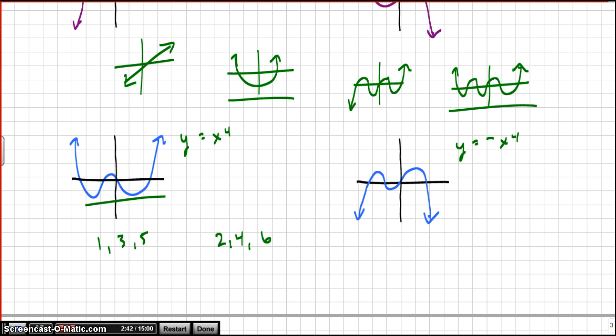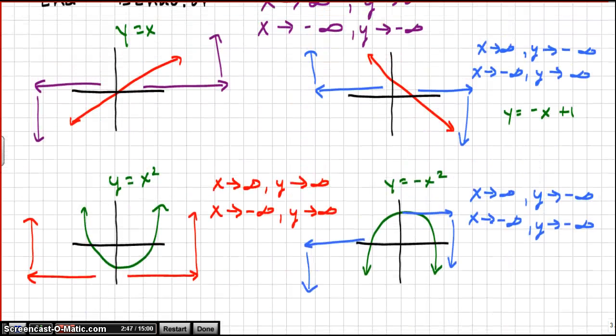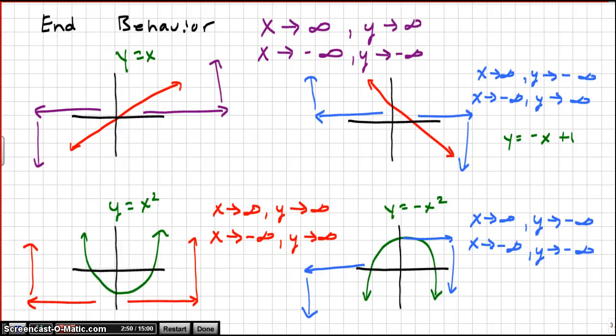So out of all the possible polynomial functions, they all come back to the same four cases. So if you have a positive odd function, it will look like the purple. This is positive odd. That's purple. If you have a negative odd, it will look like this one. If you have a positive even, it looks like the red. And if you have a negative even, it will look like that. So all you need to know is what happens with the graph of a linear and what happens with the graph of a quadratic function because all graphs follow these examples.